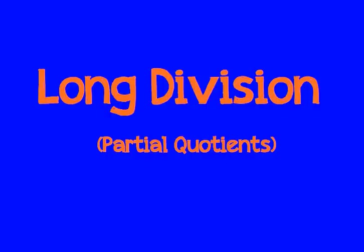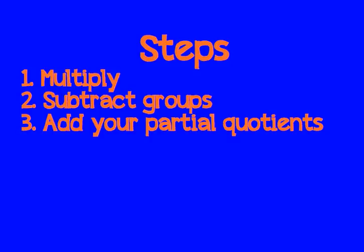In this video, we will be learning how to do long division using the partial quotients method. In the partial quotients method, there are three steps. One, we will multiply. Two, we will subtract out our multiplied groups. And three, we will add our partial quotients.